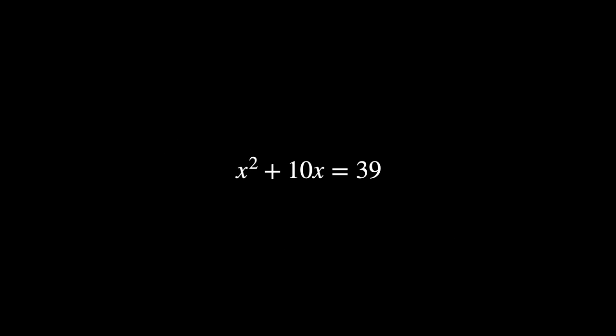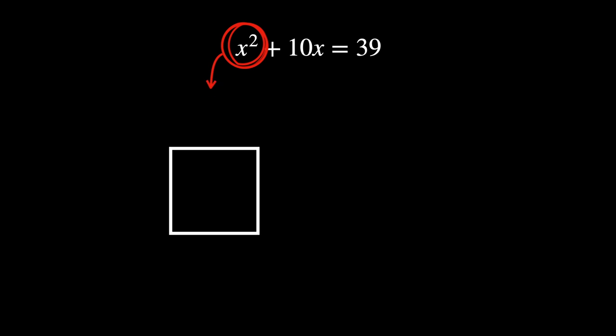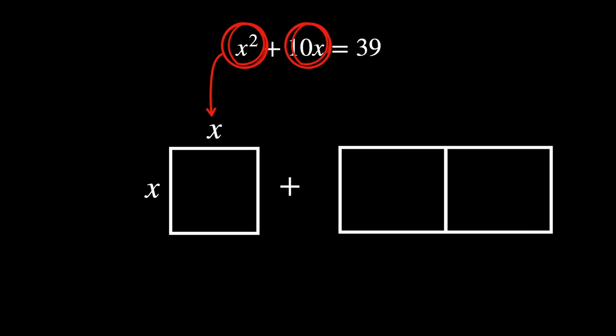Thank you and let's get back to it. How can we solve the equation x squared plus 10x equals 39 geometrically? Well, x squared would be represented by a square with all sides equal to x. Then it would be added to two rectangles, which are a representation of 10x.